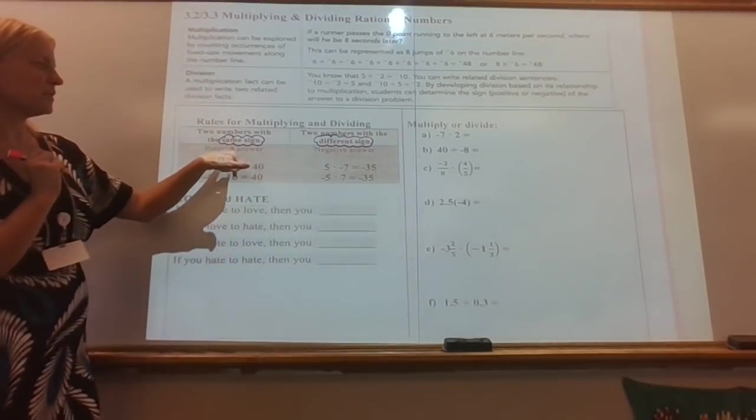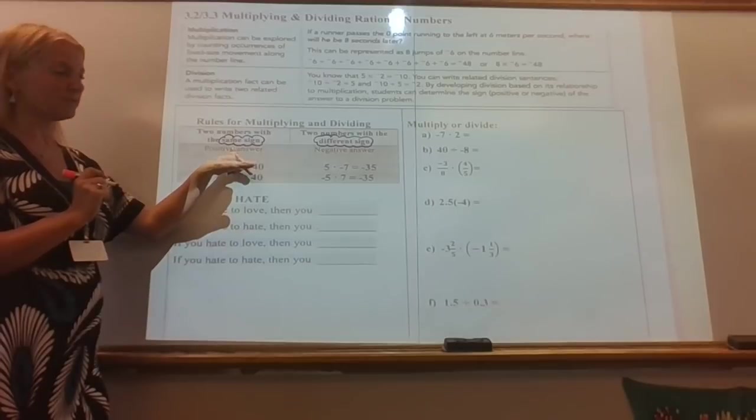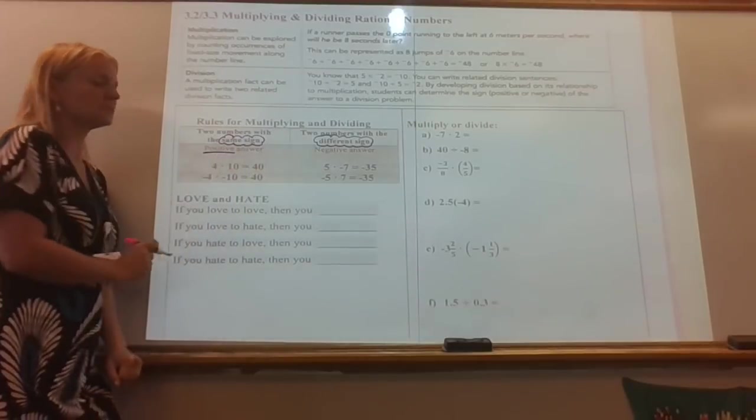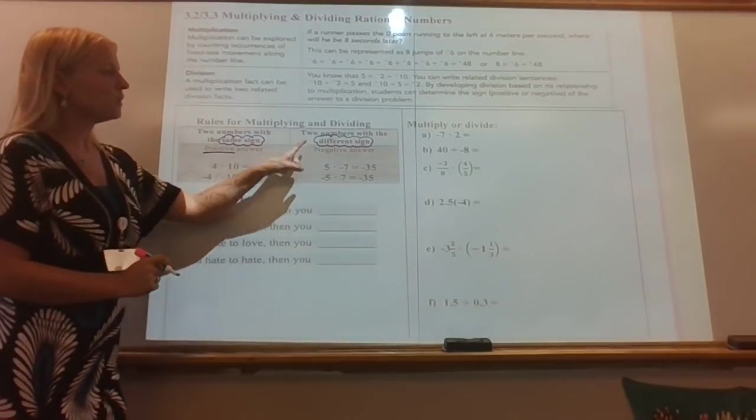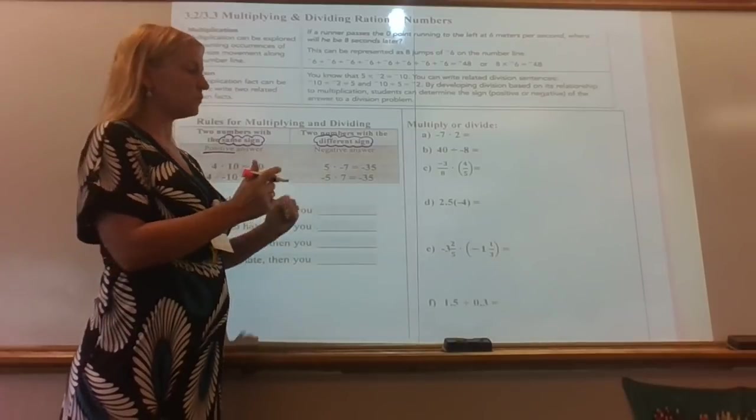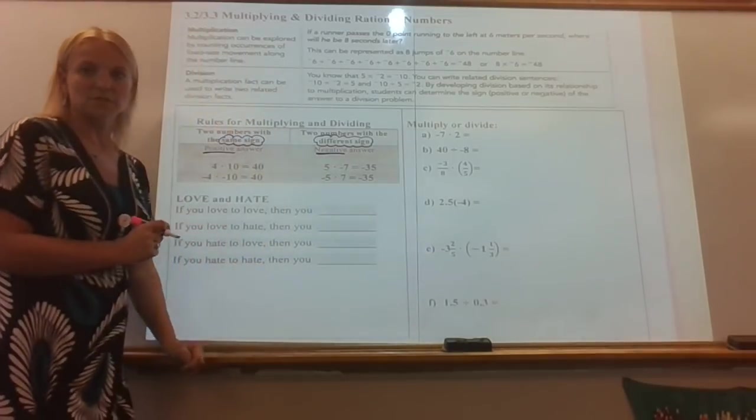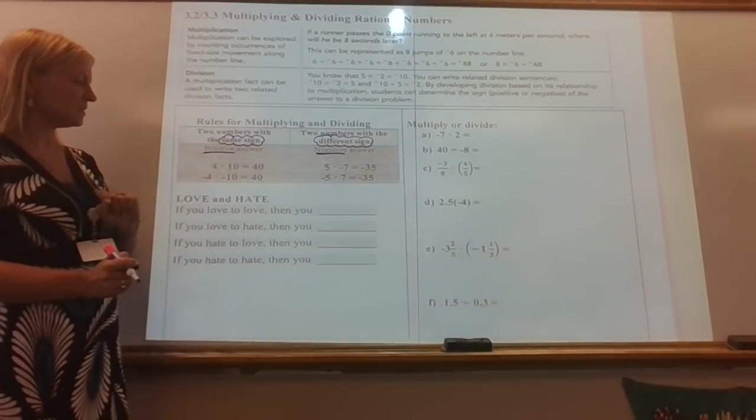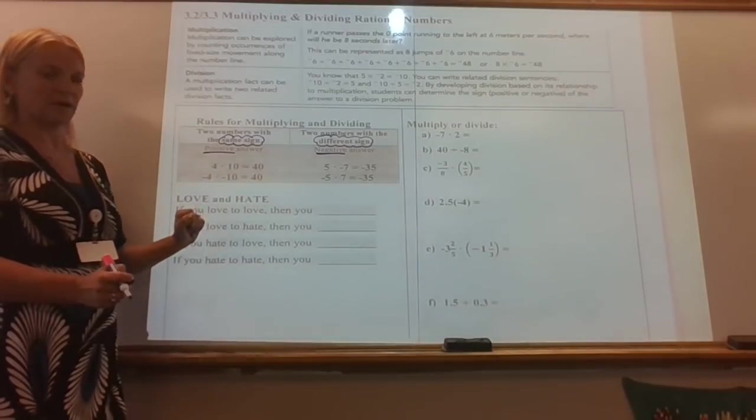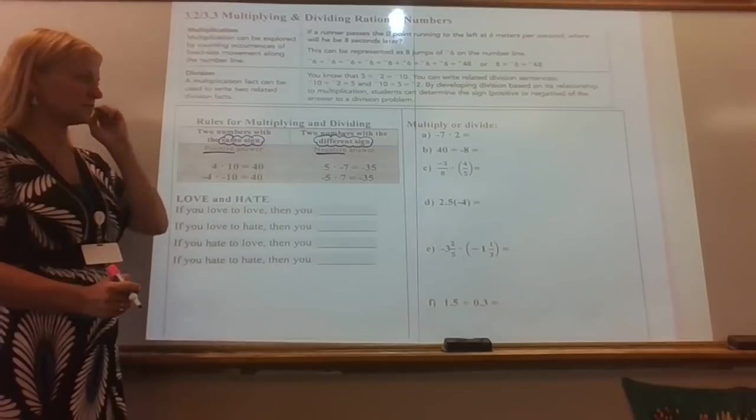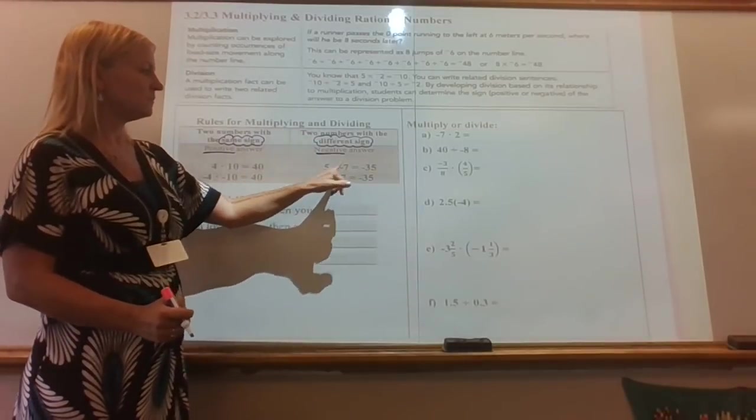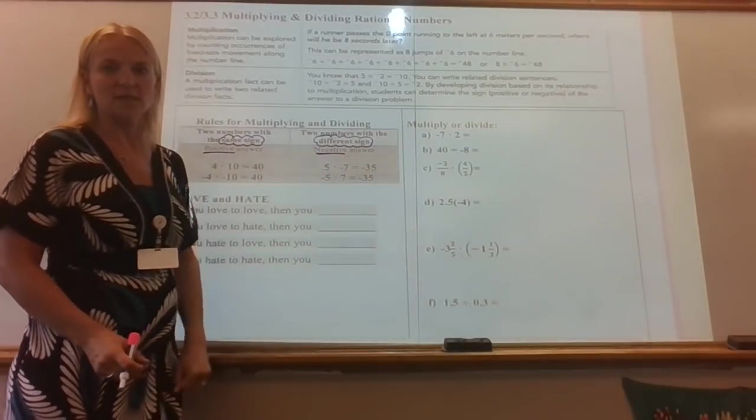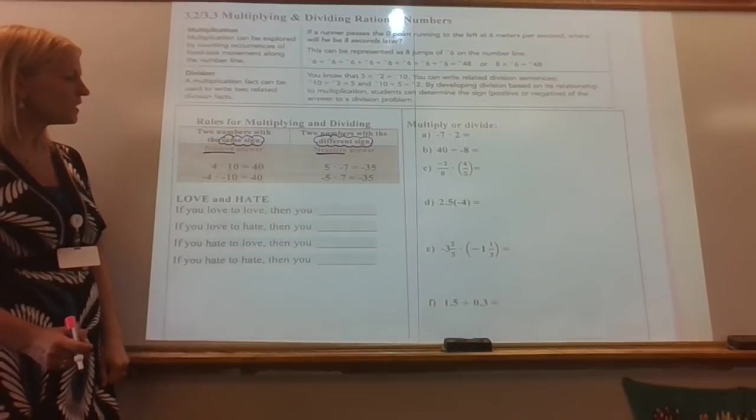When they are the same sign, meaning both positive or both negative, it's always going to make a positive answer. And when there are different signs, when one's positive, one's negative, they always make a negative answer. Here are some examples. Both positive makes a positive, both negative makes a positive. So same makes a positive. And when they're different, being different results in the answer being negative.